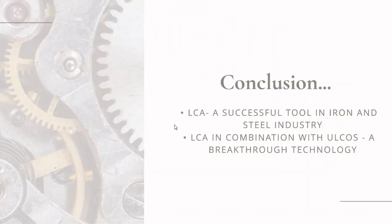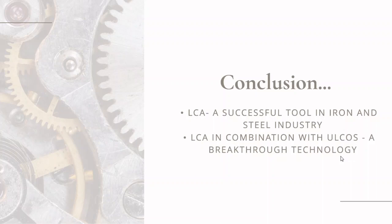In conclusion, life cycle assessment is an appropriate method for assessing environmental impact and selecting new technologies to reduce CO2 emissions in the steelmaking process by 50% or more. Ultra-low carbon steelmaking technologies — including Alkoz BF, Alkaline, Alkolysis, and HIsarna processes — are a wonderful initiative towards the sustainable development of the iron and steel industry. But there is always scope for improvement.